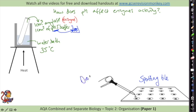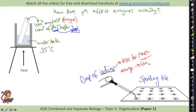Into a spotting tile we put a drop of iodine. Iodine is what we use to test for starch because if starch is present it will turn from orange-brown to black. So we add some starch to the boiling tube with the amylase and pH buffer. Amylase breaks down starch into sugar, so we are testing how effectively the amylase breaks down the starch at different pH levels.